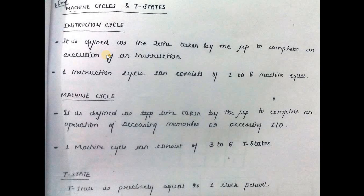Most important for exams is T-States. T-State is precisely equal to one clock period. Instruction cycle is time taken by the microprocessor to complete execution of an instruction. Machine cycle is time taken to complete an operation of accessing memory or input-output.